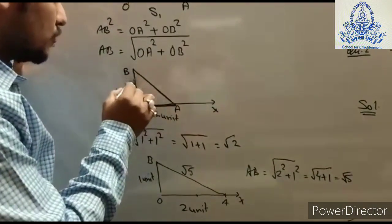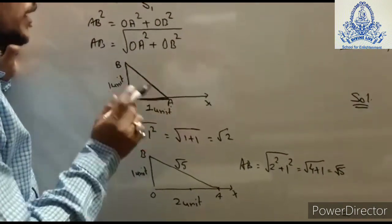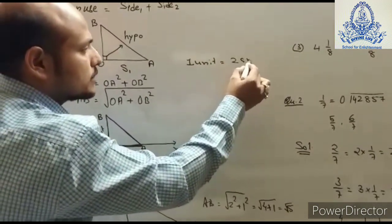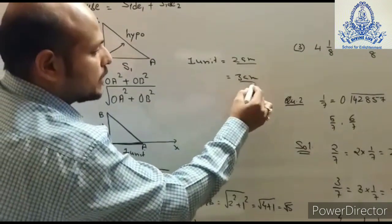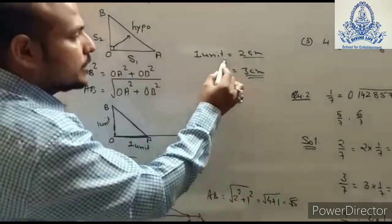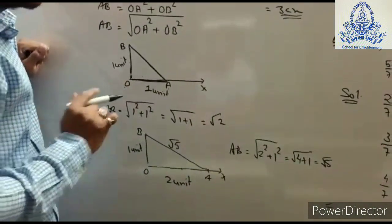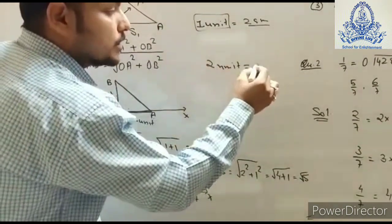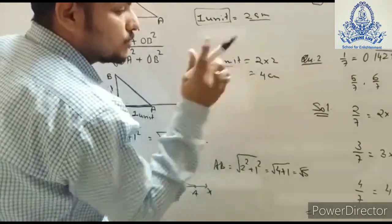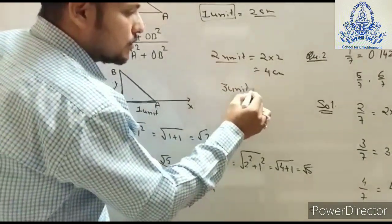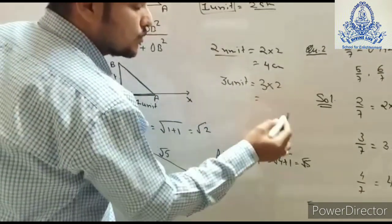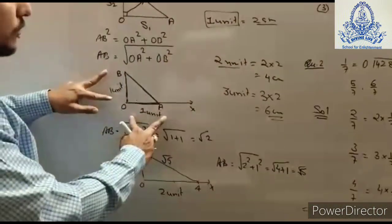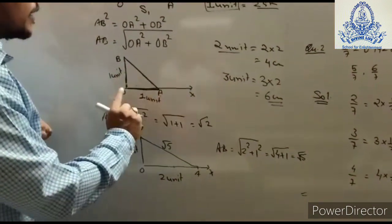Let's take an example where the two sides OA and OB are each one unit. You can take one unit as two centimeters or three centimeters as per your wish — it is not mandatory. In our question we are taking one unit equal to two centimeters, so two units would be four centimeters and three units would be six centimeters. Here we take both sides as one unit, so you draw a two-centimeter line on each side.